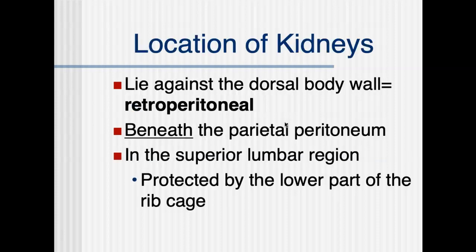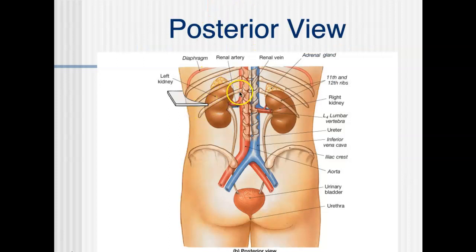The location of the kidneys: we say that they lie against the dorsal body wall, and the name for that is retroperitoneal. Retro means behind — so behind the peritoneum, which is the lining of your abdominal wall, beneath that parietal peritoneum. The kidneys are in the superior lumbar region and are partially protected by the rib cage. Here are the ribs closing over the kidney — some soccer players still get kicked in the kidney, very painful, but there is a little bit of protection there.